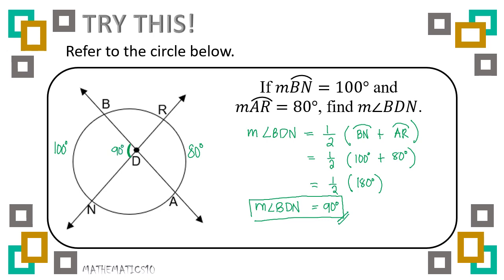If you're going to compute it mentally without showing the solution, it's your choice. But if you are required to show your solution, you may use this process: 100 plus 80 is 180, divided by 2 gives 90. So it's correct. You may use that for checking.